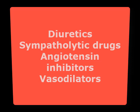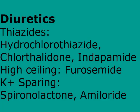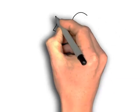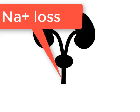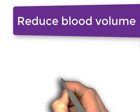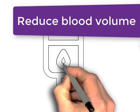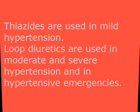Antihypertensive drugs are largely classified into four major categories: diuretics, sympatholytic drugs, angiotensin inhibitors, and vasodilators. Diuretic drugs promote sodium and water excretion and lower blood pressure by reduction of blood volume. Thiazides like hydrochlorothiazide are used in mild hypertension, while loop diuretics like furosemide are used in moderate, severe hypertension, and hypertensive emergencies.